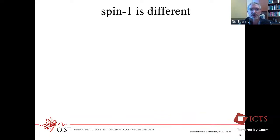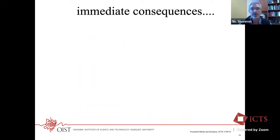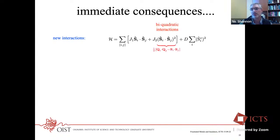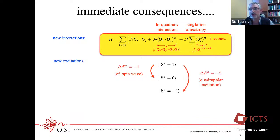Spin-one is different. You can't write this three-state system's general state as a point on a Bloch sphere, so we need to do something different. Immediate consequences of the three-state nature are new interactions — biquadratic interactions not allowed for spin-half — and ultimately interactions between quadrupoles and single-ion anisotropies, also not allowed for spin-half, which can be written in terms of on-site quadrupoles. New kinds of excitations arise too: starting from a ferromagnet, a spin-wave is a spin-one excitation, but for spin-one we can also move an individual spin down two units of angular momentum — a quadrupolar excitation — and we need to address both.